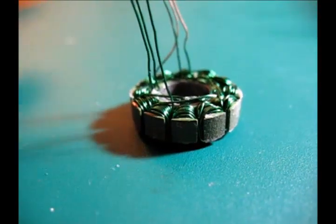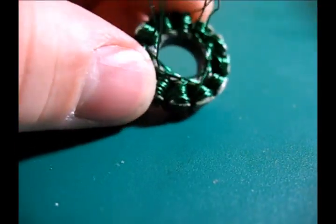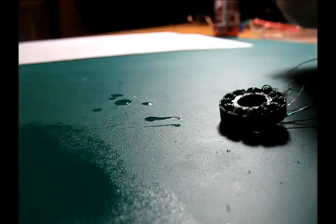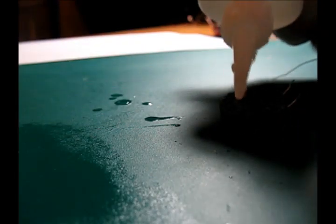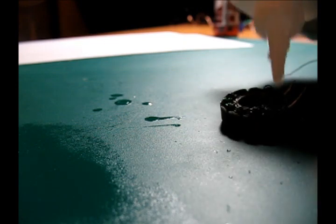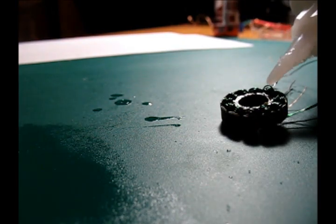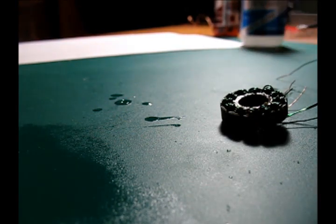We can now begin wrapping the second phase. With all phases wrapped, you should have something that looks roughly like this. To ensure that our wires don't go anywhere, I'll use a thin layer of super thin CA and then hit it again with a quick kicker. Don't let this set up too long, as it can damage the enamel on the wire.